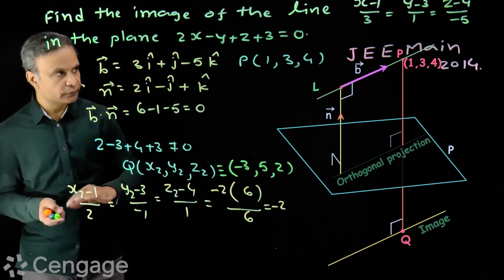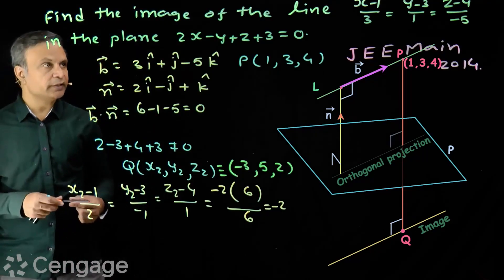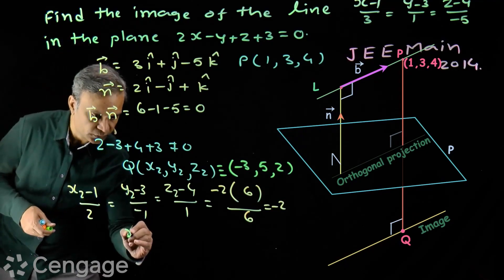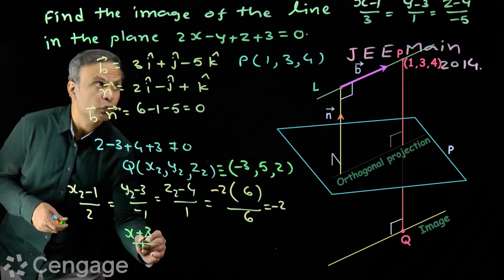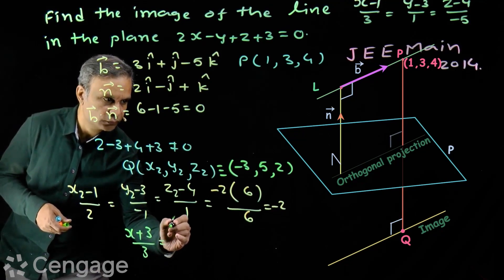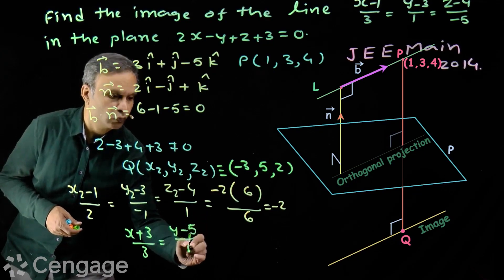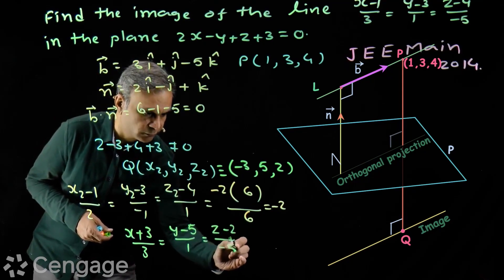Direction ratios of line are 3, 1 and minus 5. So, equation of image line will be x plus 3 over 3 is equal to y minus 5 over 1 is equal to z minus 2 over minus 5.